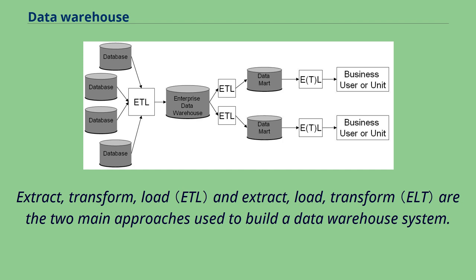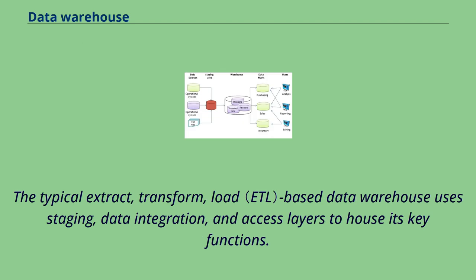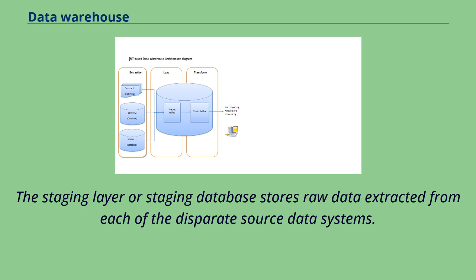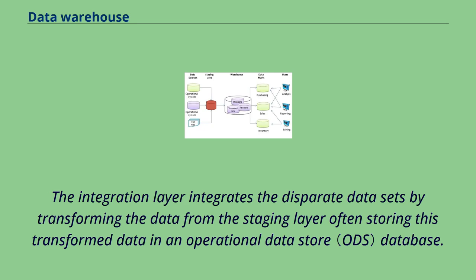Extract, transform, load (ETL) and extract, load, transform (ELT) are the two main approaches used to build a data warehouse system. The typical ETL-based data warehouse uses staging, data integration, and access layers to house its key functions. The staging layer stores raw data extracted from each of the disparate source data systems. The integration layer integrates the disparate data sets by transforming the data from the staging layer, often storing this transformed data in an operational data store database.